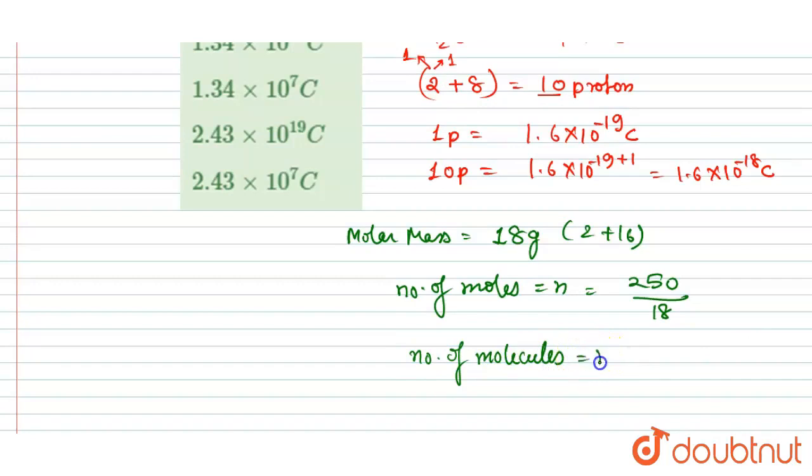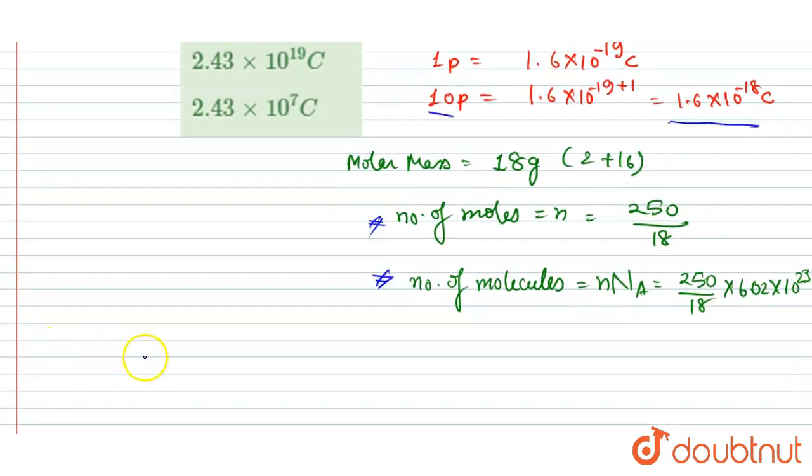We'll multiply the number of moles by Avogadro's number, that is 6.02 × 10^23. So I will write here: one molecule has 1.6 × 10^-18 coulombs charge.